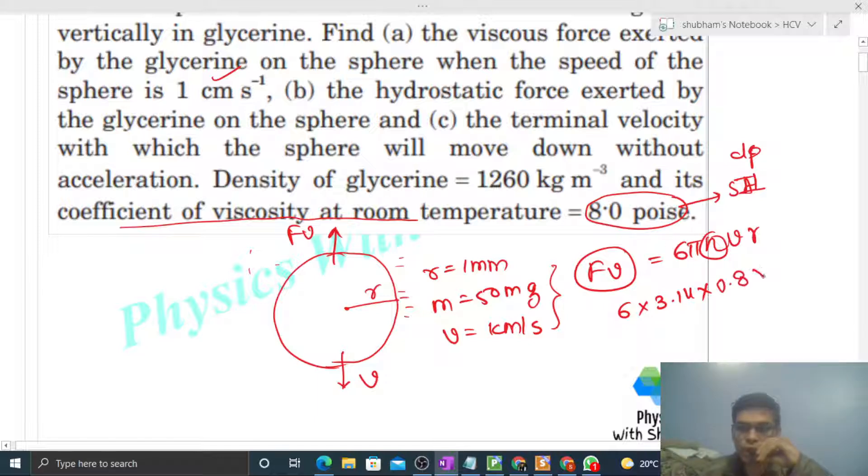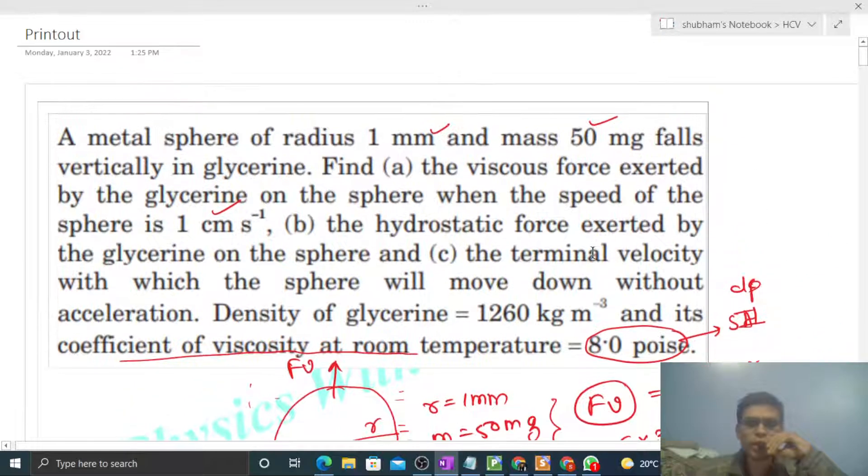Times the speed, 1 centimeter per second, which is 0.01 meter per second, times the radius 10^-3. Solving this gives approximately 1.5 × 10^-4 newton.